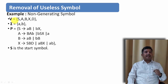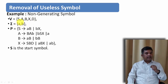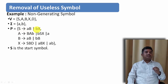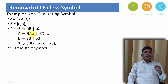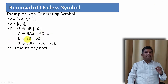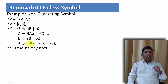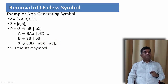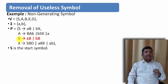Let us look at one more example. Here V is given as S, A, B, X, and D. The terminal symbols are 'a' and 'b'. Productions are: S derives AB or BX; A derives BA, B or BS, X or A; B derives AB, B or BB; and X derives SB, D or AB, X or AB, where S is the starting symbol. You can see this particular production: B derives AB or BB.